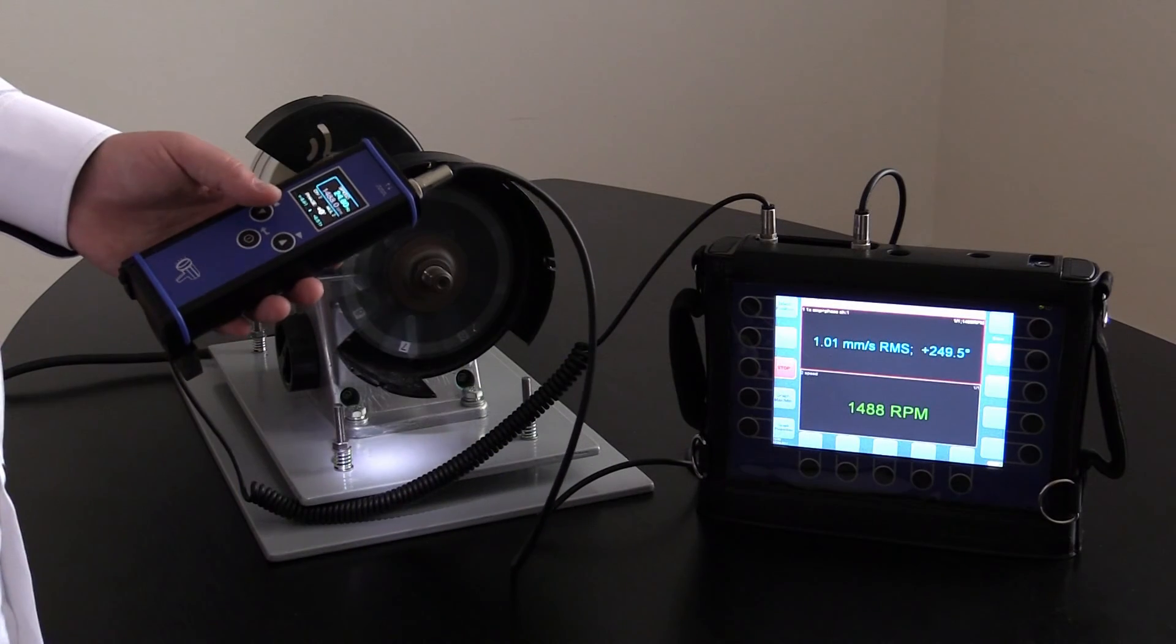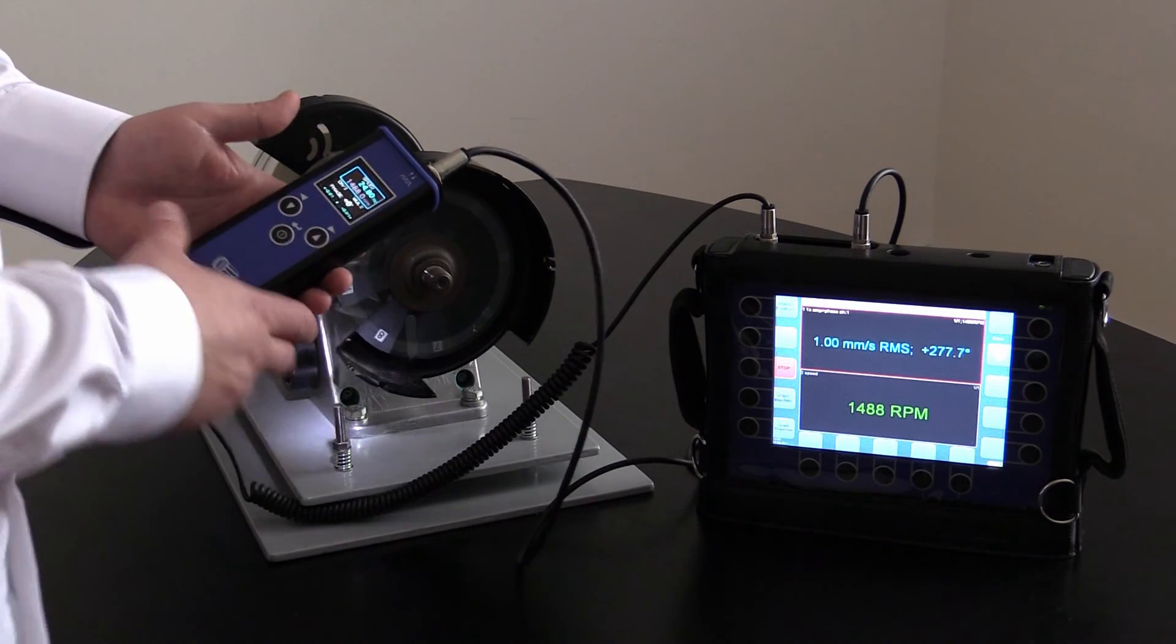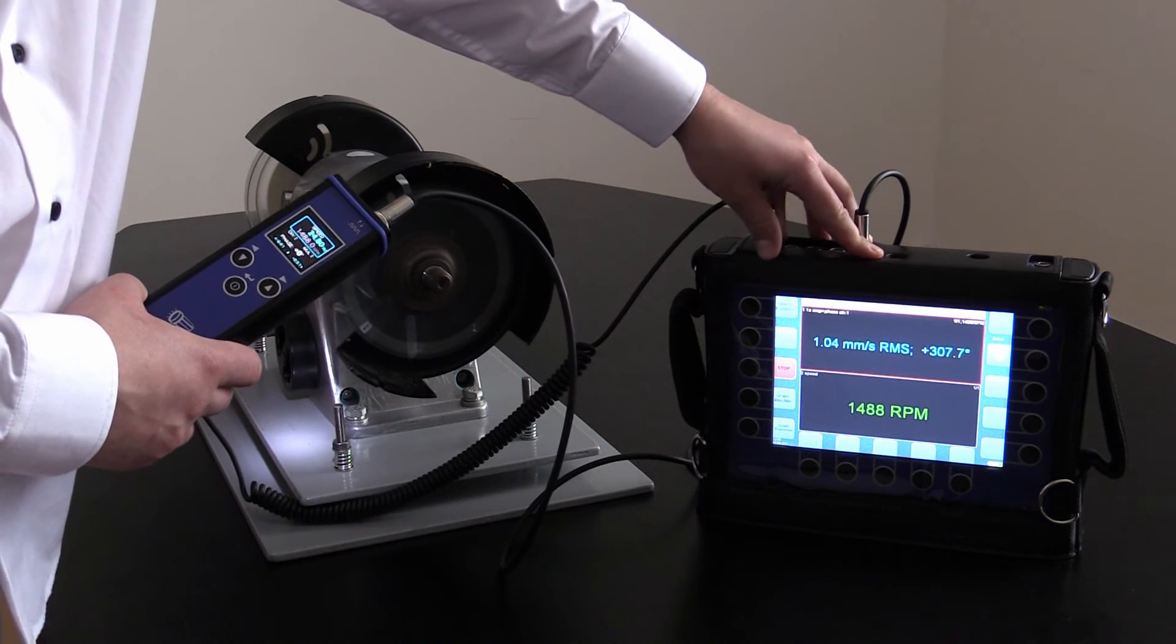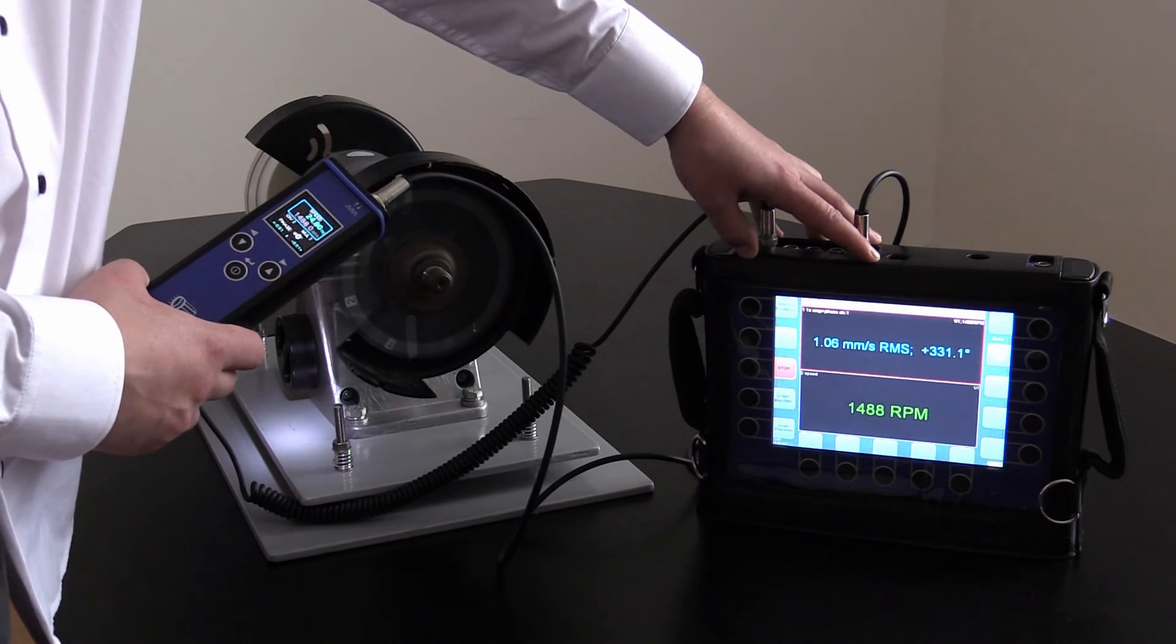Another function is that I can use the stroboscope for triggering of my measurement. I've connected the strobe into the trigger input of our VA4 Pro analyzer. I can also use VA3 Pro or SAB analyzer.